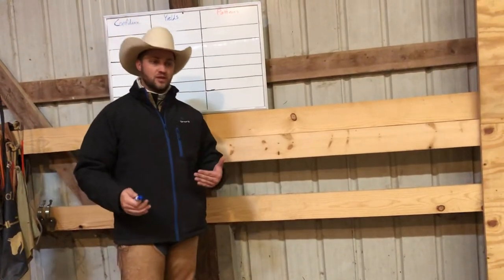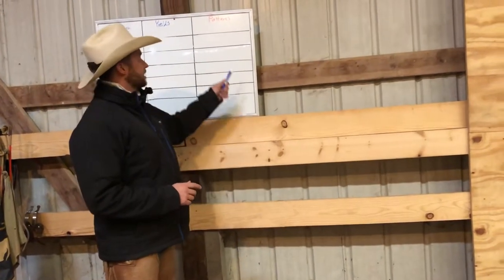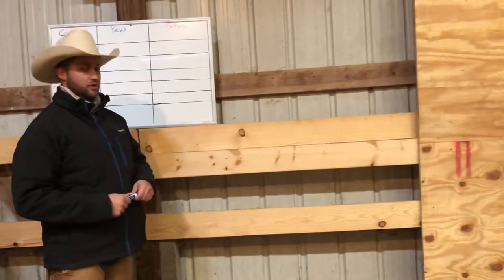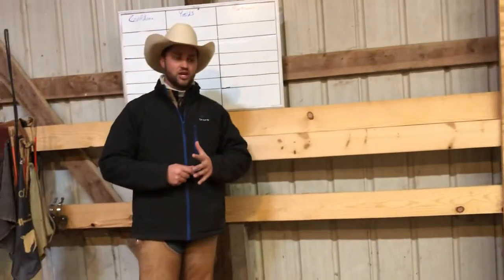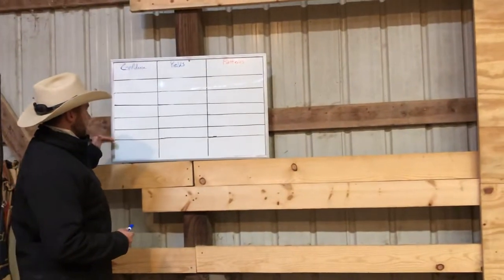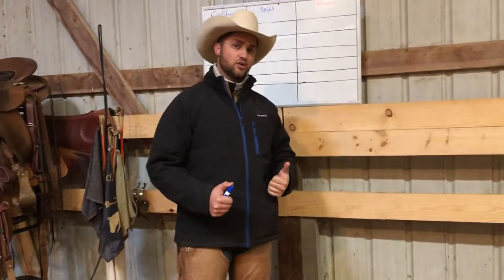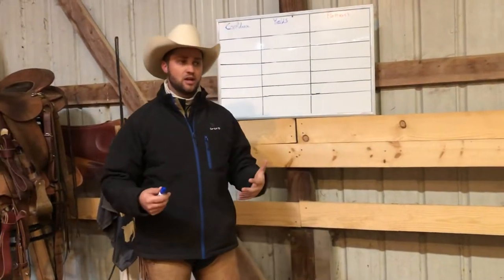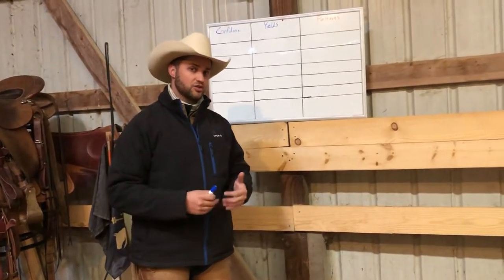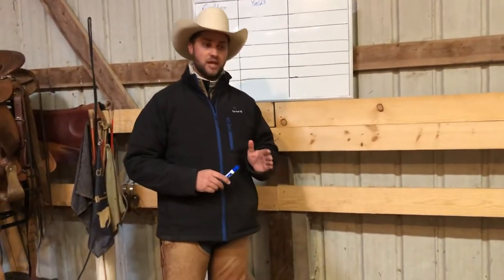We pick some different yields that we're going to ask the horse to do. And then we also try to pick a pattern that we're going to be riding the horse on. Normally what we have is the horses' names written up here on the board, and then we can all follow this — myself and my assistant trainer Grace — so we can be on the same page with what each horse is working on.